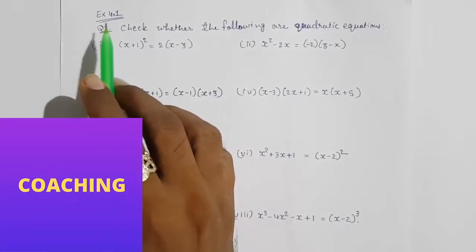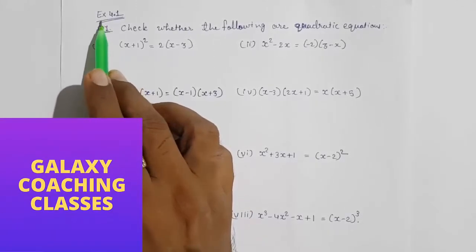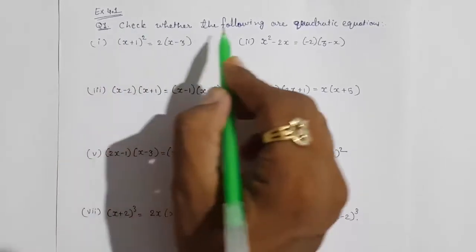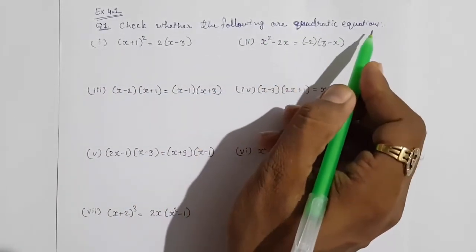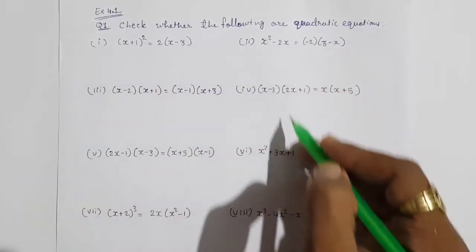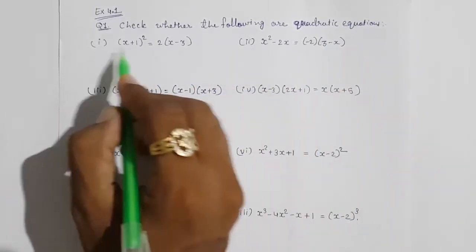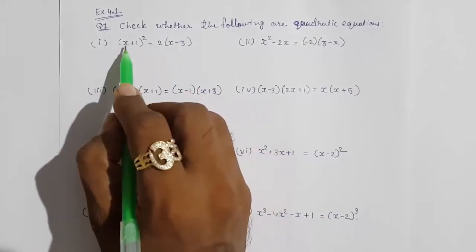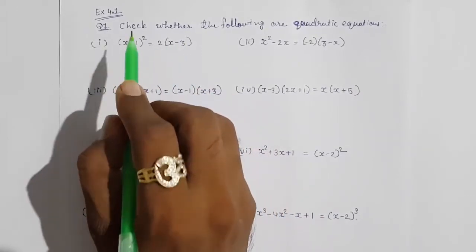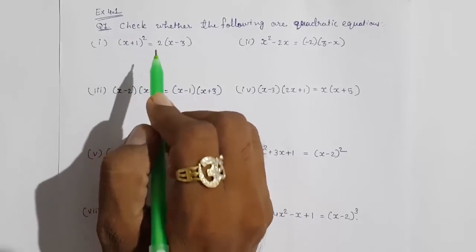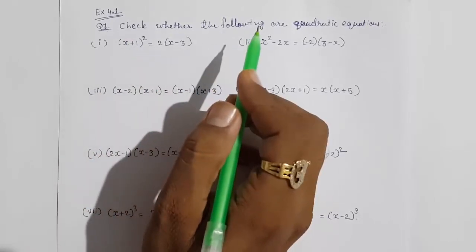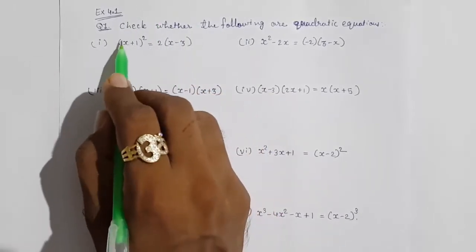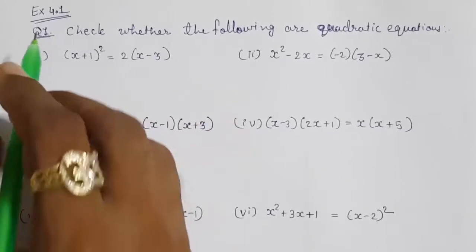Hello friends, today we are going to solve CBSE class 10th maths exercise 4.1, question number 1. Check whether the following are quadratic equations. Here a few expressions are given. First we have to solve them, and if we get highest power of x², then we can say it is forming a quadratic equation. Otherwise not. If the highest power is 3, or if only x is there, then also no. Let us start.